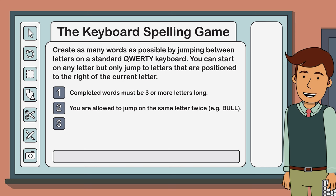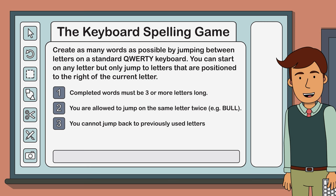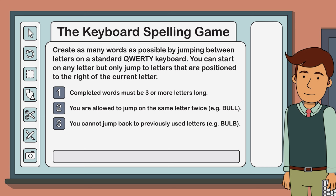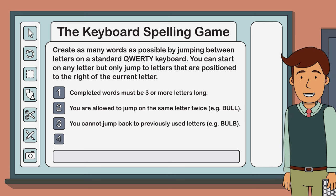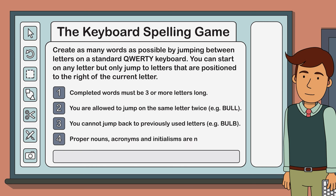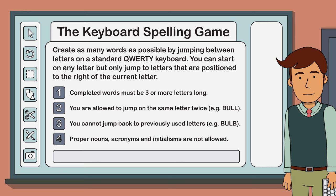Number three: jumping back to previously used letters, however, is not allowed — so the word bulb would not count. And number four: proper nouns, acronyms, and initialisms are not allowed.